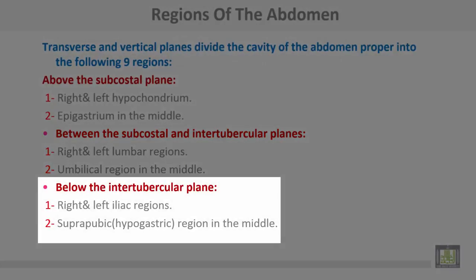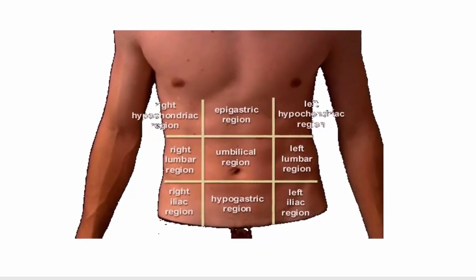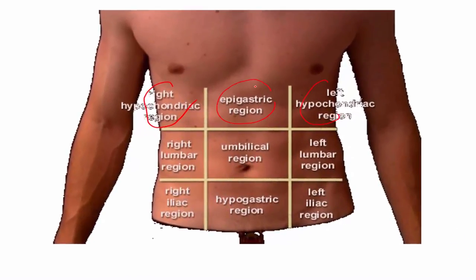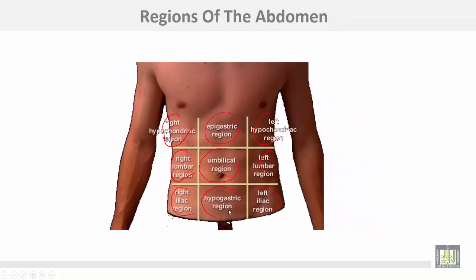Below the intertubercular plane: the right iliac region and left iliac region, and the suprapubic or hypogastric region in the middle.